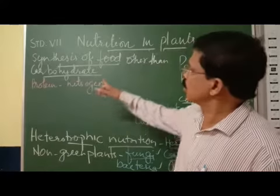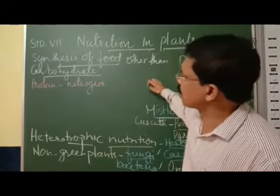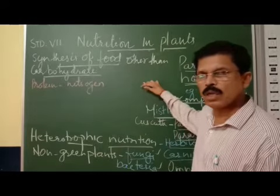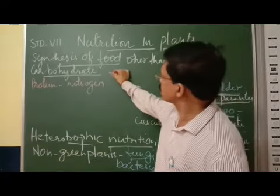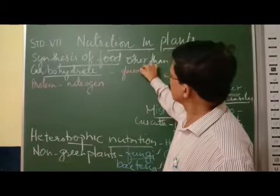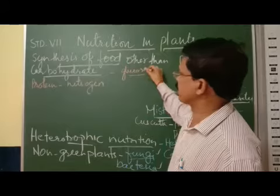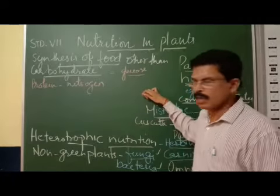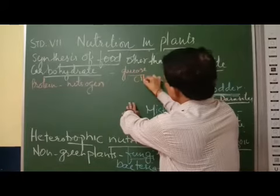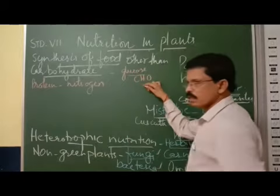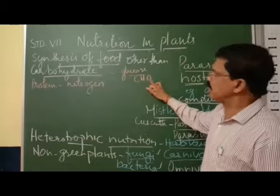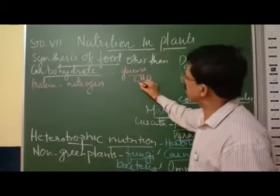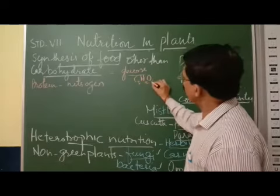We will be studying about the synthesis of food other than carbohydrates. Everybody knows that during photosynthesis, glucose is synthesized. Glucose is a carbohydrate which consists of carbon, hydrogen, and oxygen — its formula is C6H12O6.